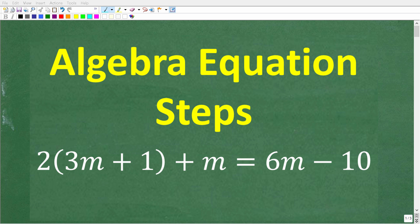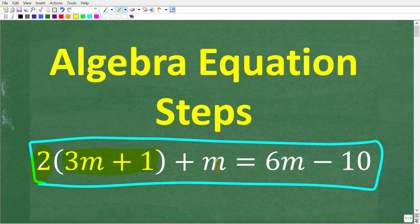All right, now let's see how well you solve algebra equations. And what we have here is a linear equation. Matter of fact, the problem is 2 times 3m plus 1 plus m is equal to 6m minus 10.